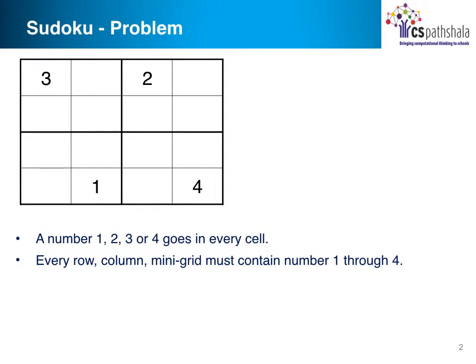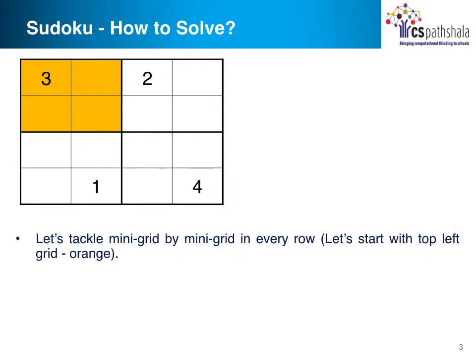So let us first learn how to solve a 4 by 4 Sudoku. In a 4 by 4 Sudoku problem, as shown here, numbers 1, 2, 3, and 4 go in every cell. Each row, column, and mini grid must contain these numbers exactly once. Let's break it down further into a smaller problem — let's start with one 4-cell grid at a time.